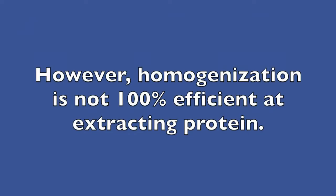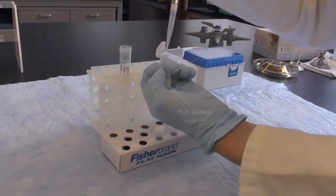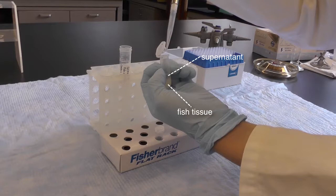However, the protein concentration in the supernatant may not reflect the total protein concentration of the homogenized fish solution, because homogenization is never 100% efficient at extracting the proteins in the cells. This is indicated by the remaining fish tissue at the bottom of the microfuge tubes. Therefore, we must account for the amount that is lost.